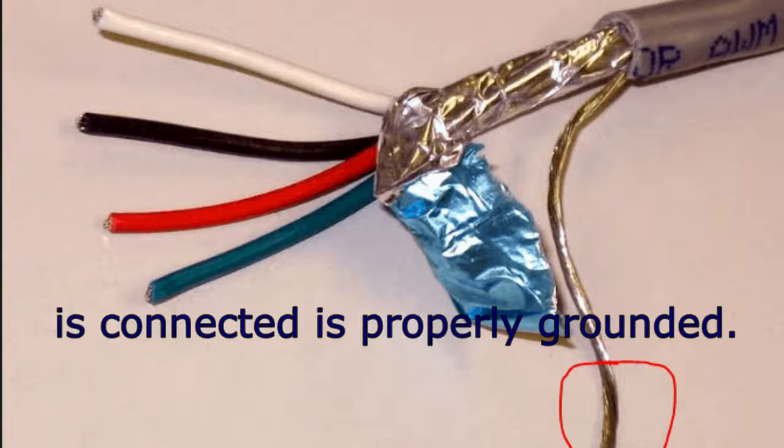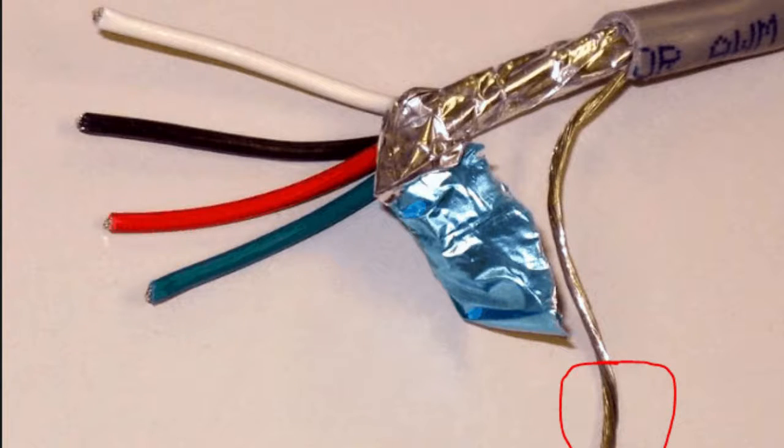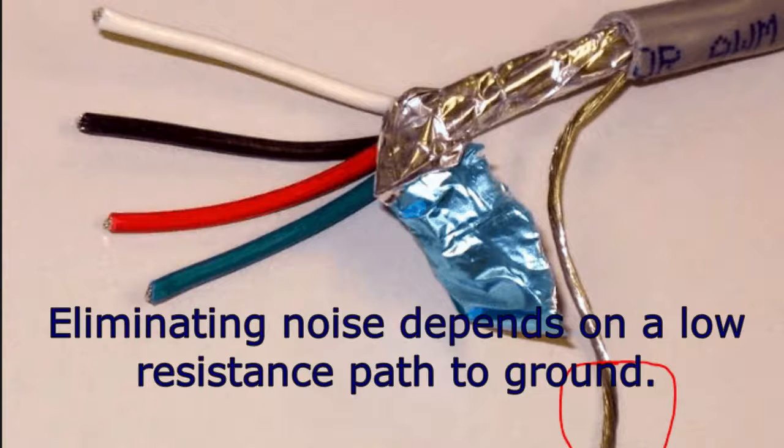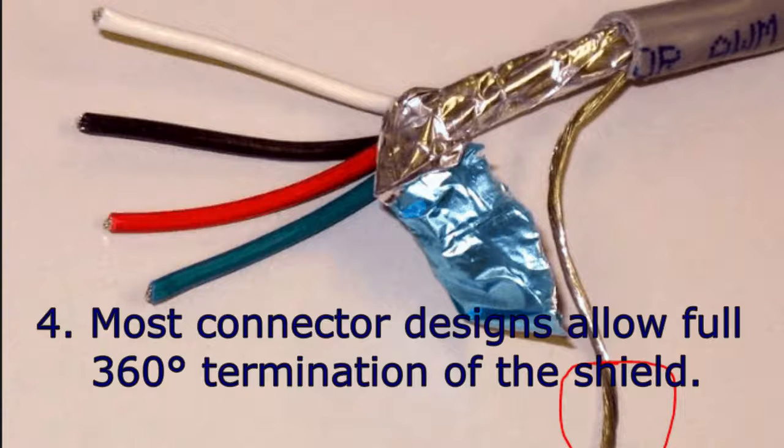Three, make sure the equipment that the cable is connected to is properly grounded. Use an earth ground wherever possible and check the connection between the ground point and the equipment. Eliminating noise depends on a low-resistance path to ground.